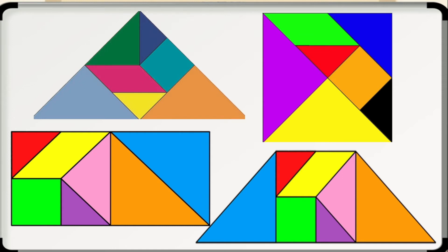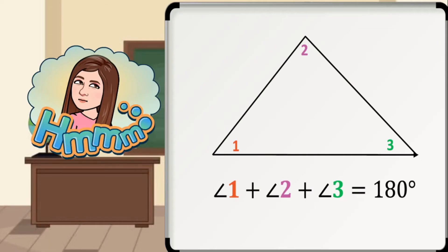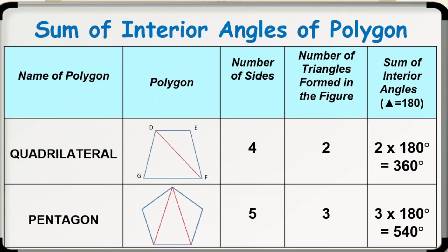Recall that the sum of the measures of the interior angles of a triangle is 180 degrees. The table that follows illustrates convex polygons with all possible diagonals drawn from one vertex. In each case, the polygon is separated into triangles. The sum of the measures of the angles of a polygon can be found by adding the measures of the angles of triangles. Here's the table for the sum of interior angles of a polygon.